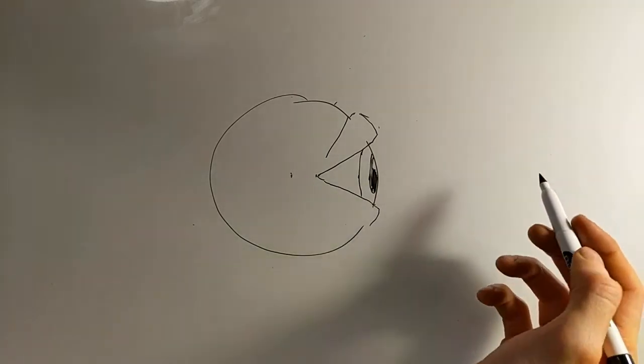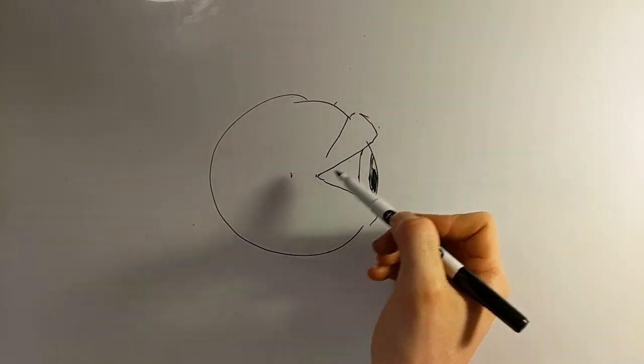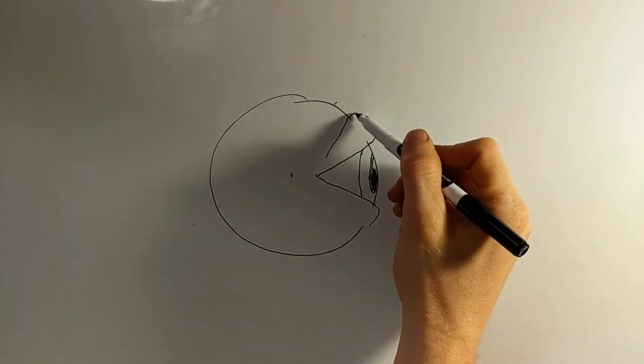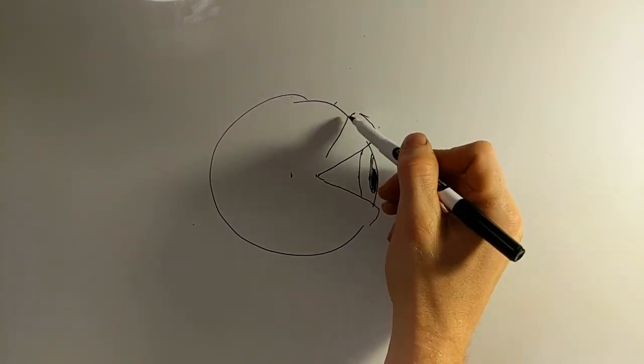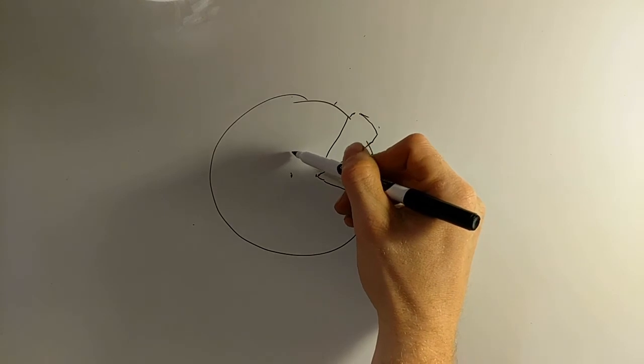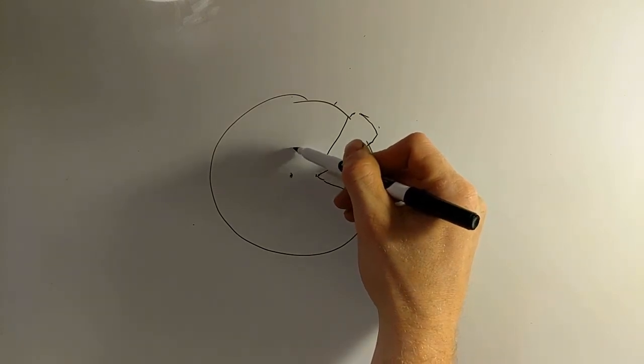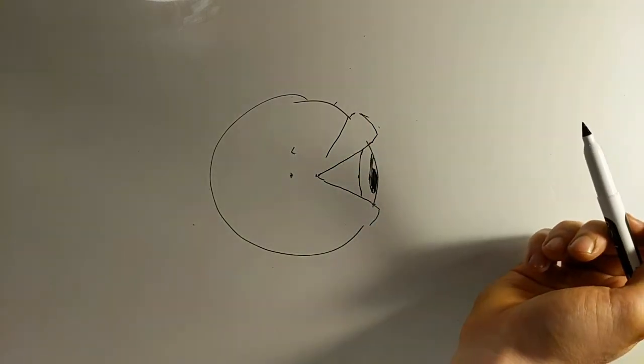Very similar process to when you draw an eyebrow on an eye from the side. This distance here, follow it along until you get to the center point of the sphere. That's going to be the end of the eyebrow.